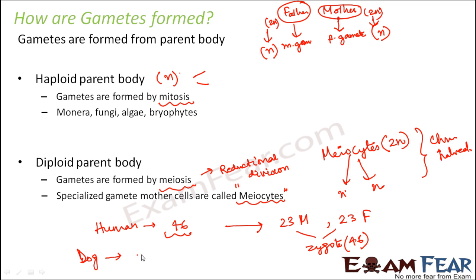Similarly, take the example of a dog. The number of chromosomes in each cell of a dog is 78. So the meiocyte in a dog will also have 78 chromosomes. This meiocyte undergoes meiosis to produce male and female gametes which will each have 39 chromosomes. The same pattern holds for all organisms with a diploid parent body.